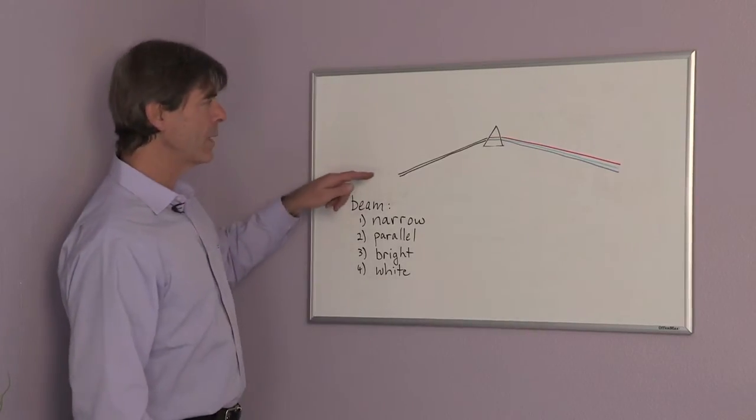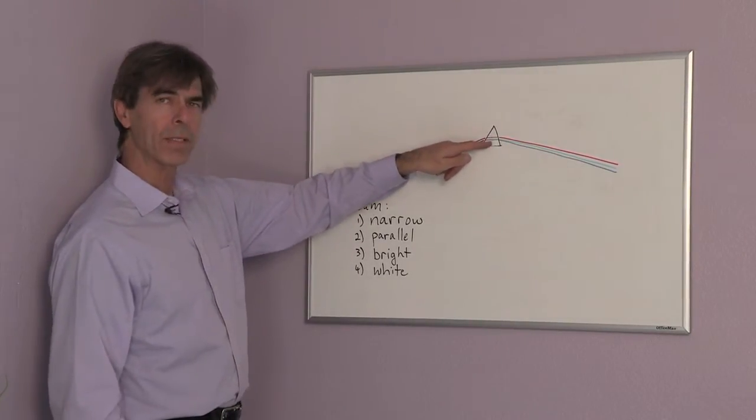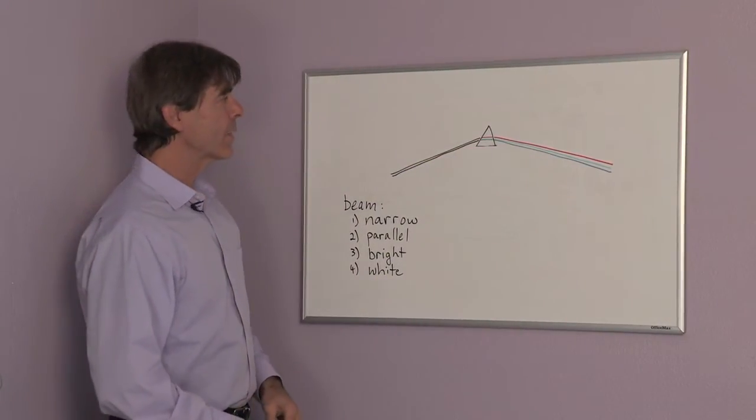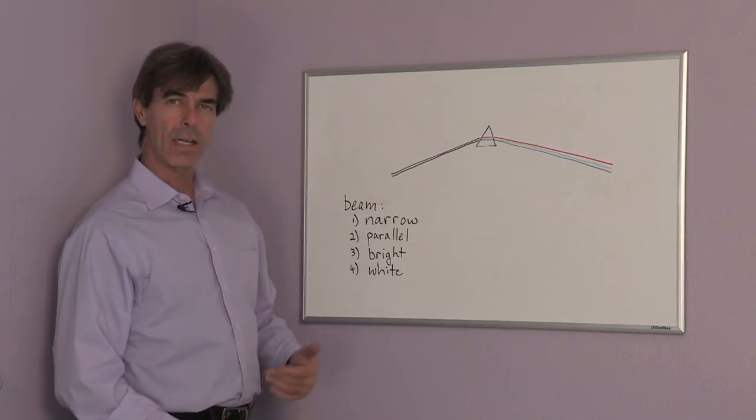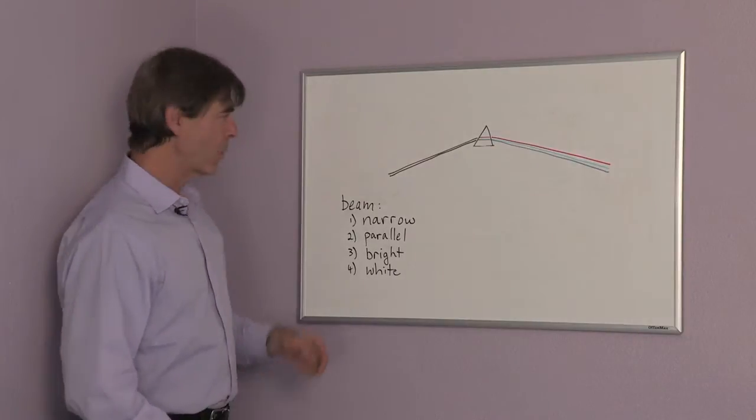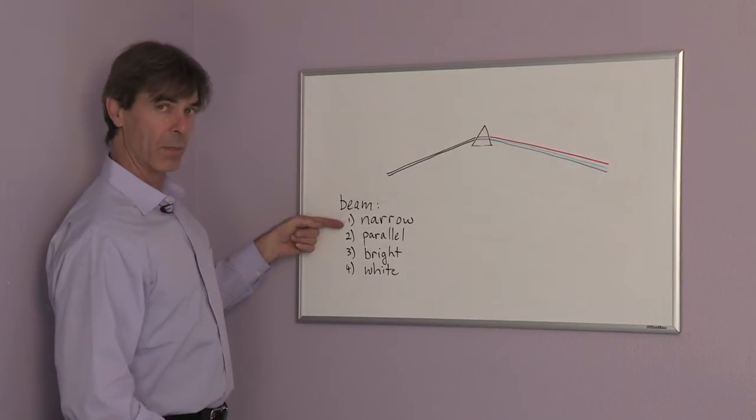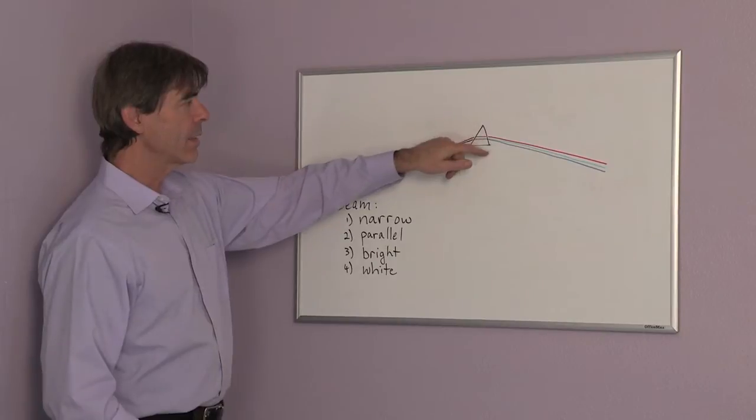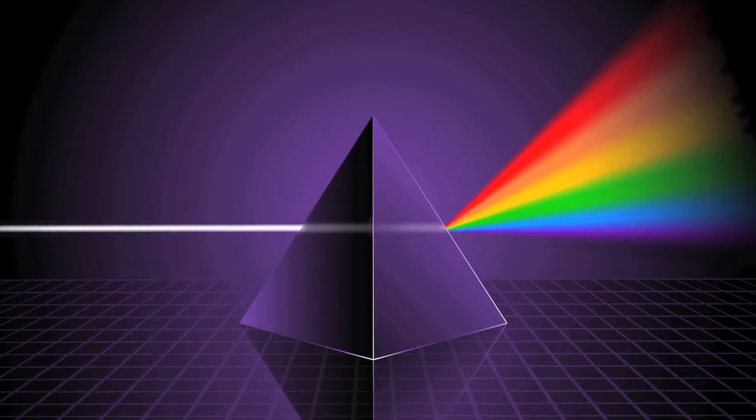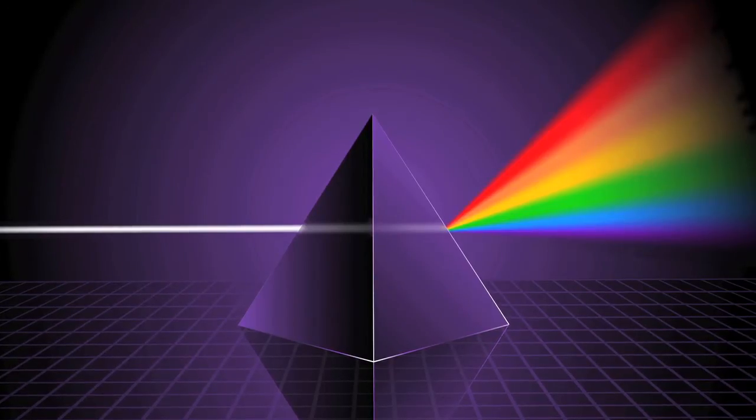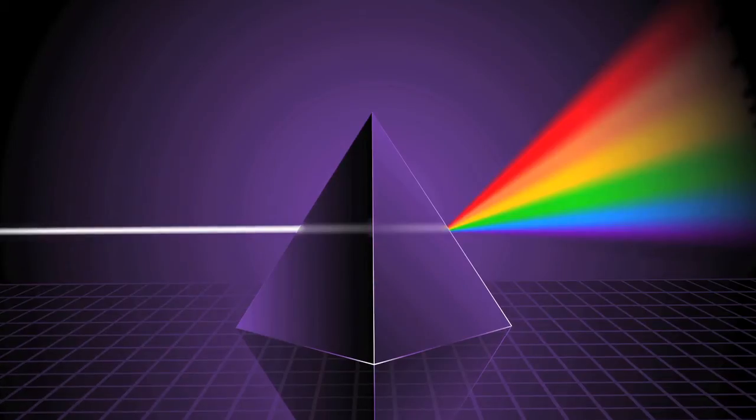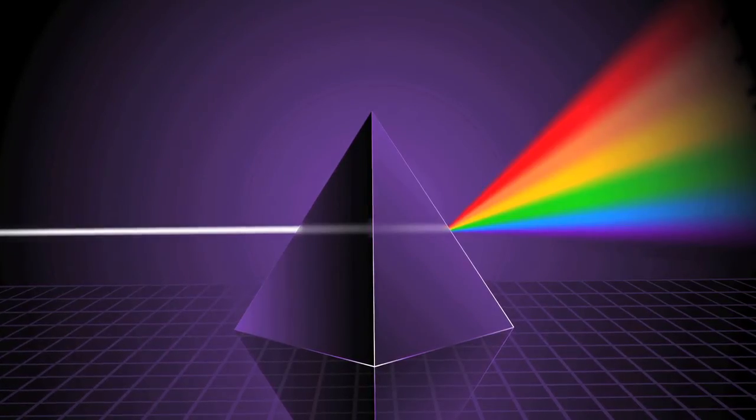Now we require of our beam: number one, we want it as narrow as possible, because if it were wide then you're going to be mixing up the colors. We want it parallel for the same reason—you don't want to mix up the colors. We want it bright so that we can see it, of course, and we're asking for it to be white.